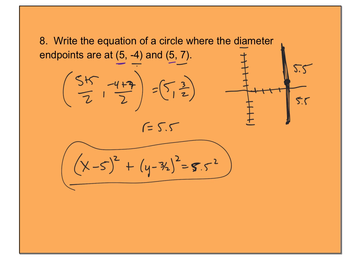This problem is obviously a little bit different — a twist on circles that brings in some graphing and other pieces you have to be aware of. Next is your assignment, then you're doing 7.7 assignments and 7.7 quizzes, and then you're onto your unit seven review. If you know what you're doing, you're ready for the test. Thank you.